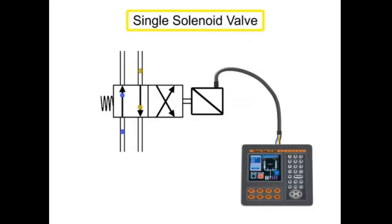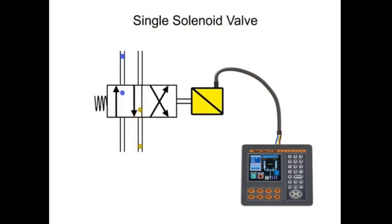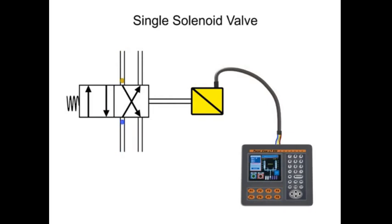A single solenoid valve has one solenoid to assist in valve operation. The valve spool shifts when the solenoid receives an electrical signal and is energized. The valve will remain shifted as long as electrical current is applied to the solenoid.